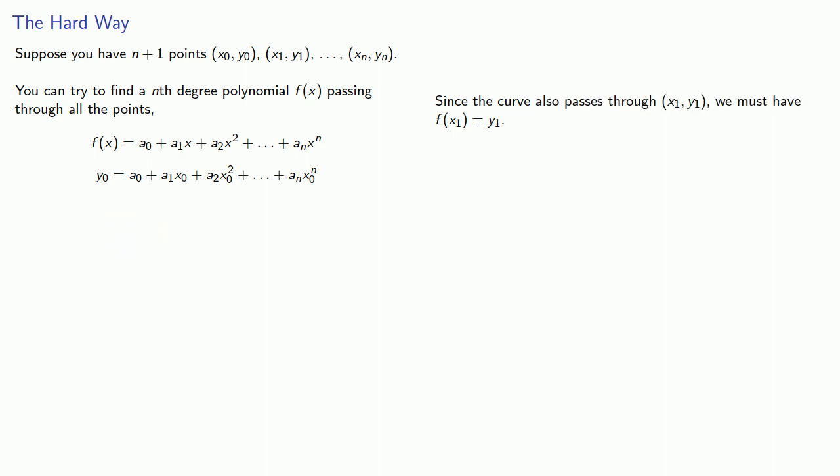Similarly, since the curve also passes through (x1, y1), we must also have f(x1) equals y1. And so again, this gives us a second equation with n+1 unknowns.